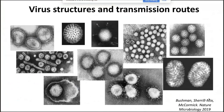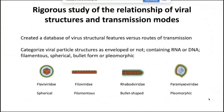We wanted to carry out a rigorous study of the relationship of viral structures and transmission modes, so we made a detailed database. We categorized viral particle structures as enveloped or not, containing RNA or DNA, and whether they were filamentous, spherical, bullet-formed, or pleomorphic — meaning lots of different shapes. We also cataloged transmission modes.